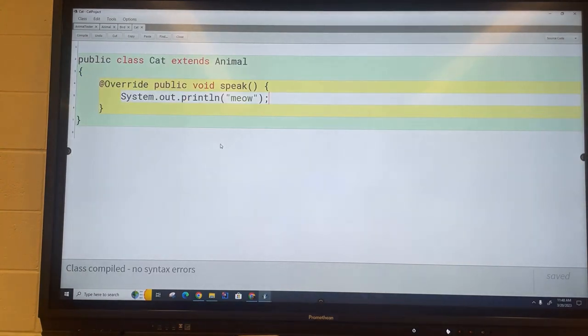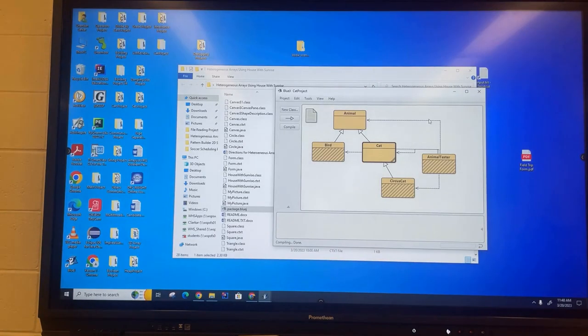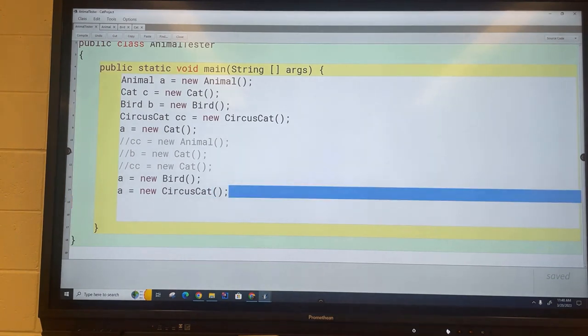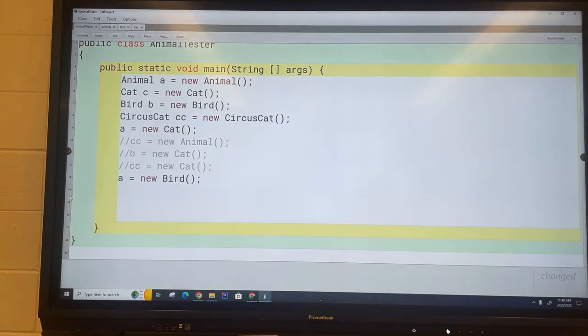Now if I go over here to the animal tester and I go a equals new bird and I go a dot speak, the first question I have is can you guess what it's going to say? Is it going to say grunt or is it going to say chirp?